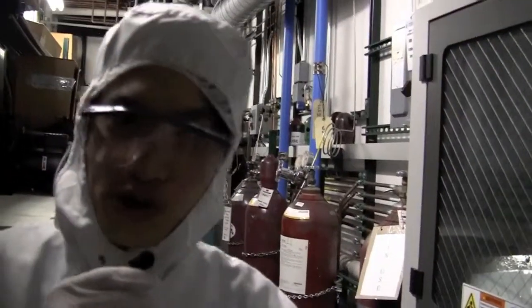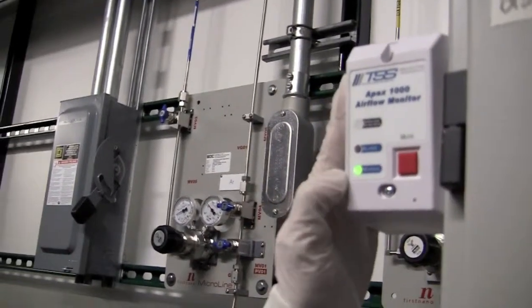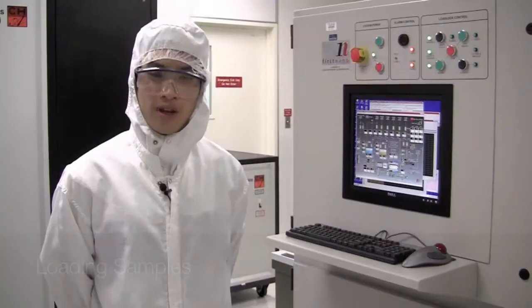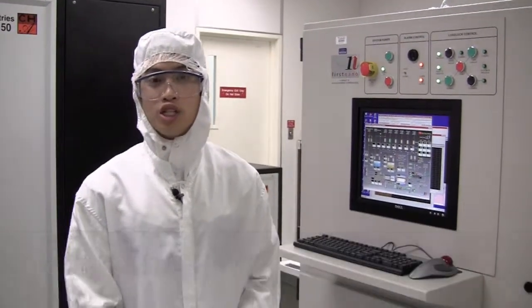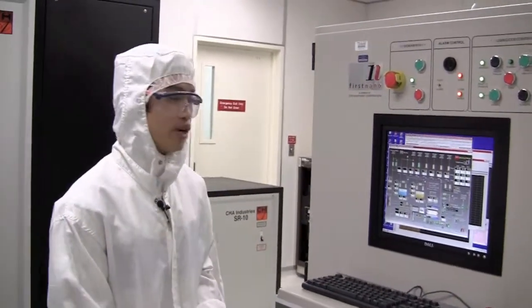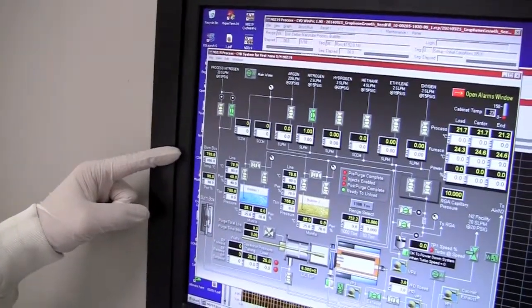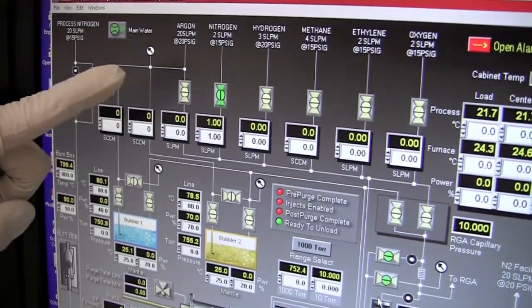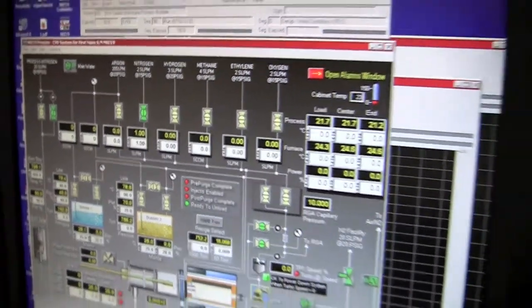The final aspect to make sure the CVD furnace is ready to use is to check this box here. A green light says the exhaust is working correctly and we're ready to run our recipe. Now that we've verified gas cylinders, water chiller, and burn box are on, we can begin. We want to note that nitrogen is flowing, purging our system, but no other lines are flowing gas right now. That's what we want when we load samples.